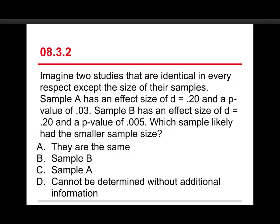Second question, also a long one. Imagine two studies that are identical in every respect except the size of their samples. Sample A has an effect size of Cohen's D equal to 0.20 and a p-value of 0.03. Sample B has an effect size of D equals 0.20 and a p-value of 0.05. So same effect size and different p-values.